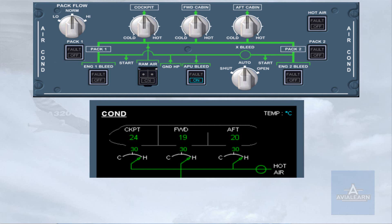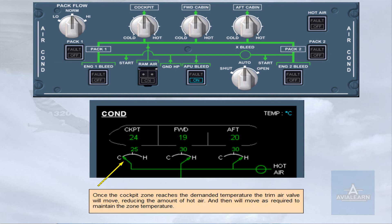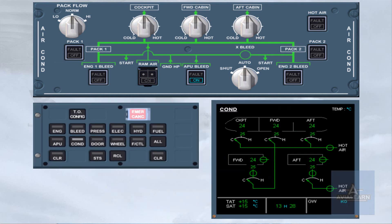Once the cockpit zone reaches the demanded temperature, the trim air valve will move, reducing the amount of hot air, and will then move as required to maintain the zone temperature. It is now time to start the engines. Note: normally the engine page is displayed during engine start, but for training purposes we will display the bleed page.